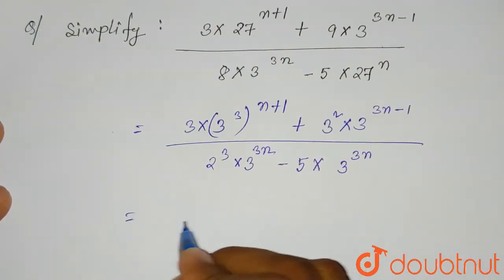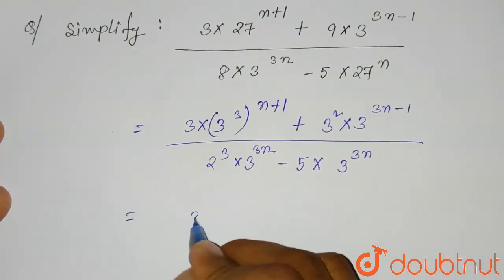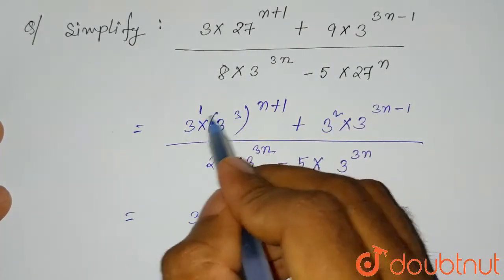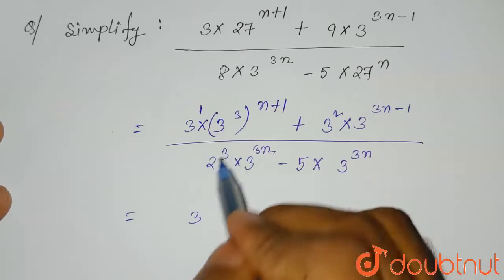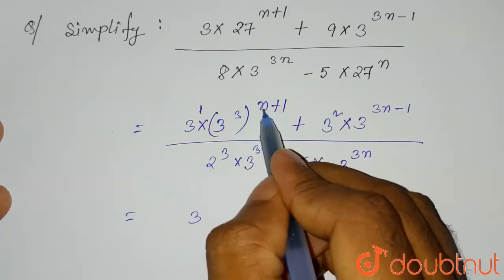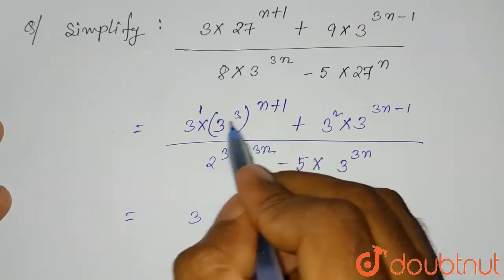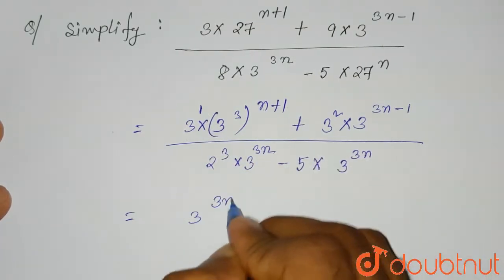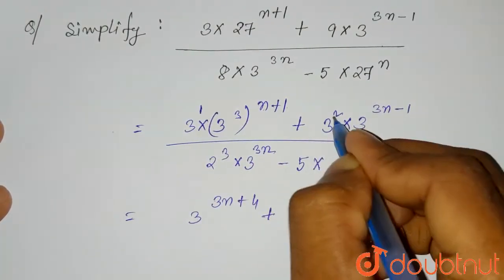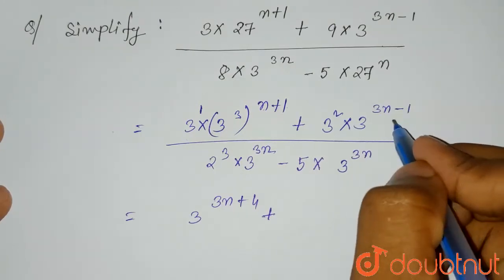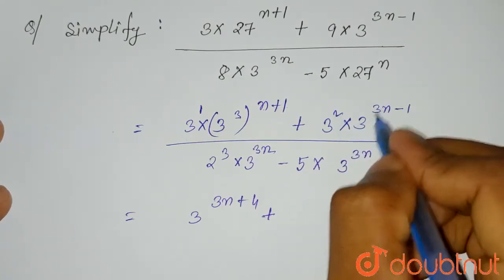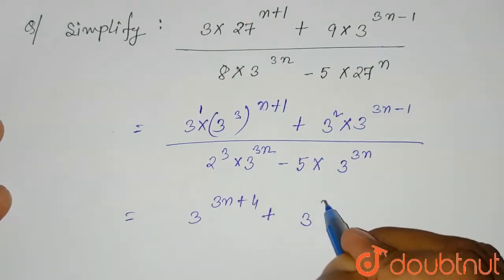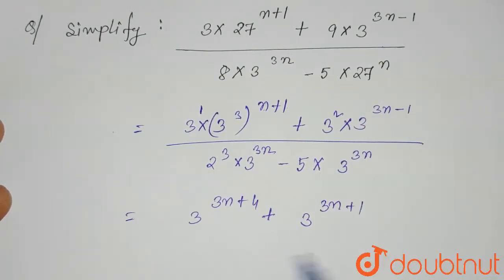So this value will be equal to: writing 3 to the power 1, and since the base is the same the powers are added — so it becomes 3 to the power 3n+3 plus 1, which is 3n+4. Plus, for 3 squared and 3 to the power 3n minus 1, the powers add to give 3 to the power 3n+1.